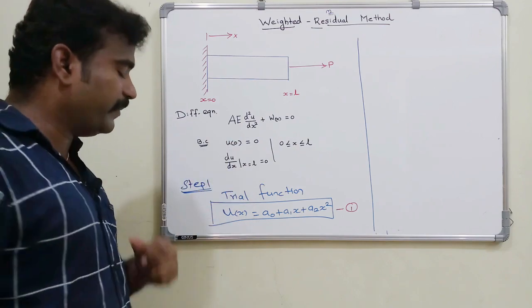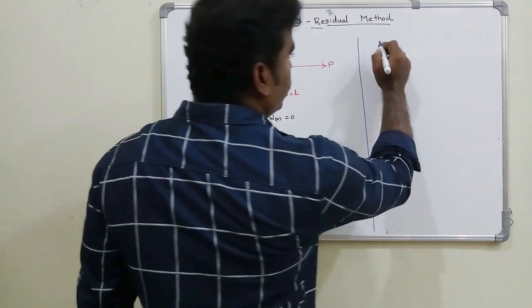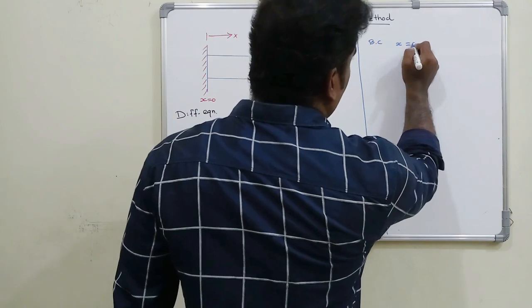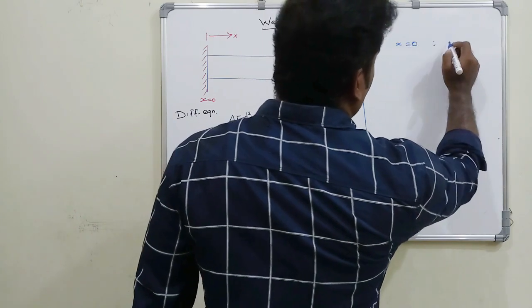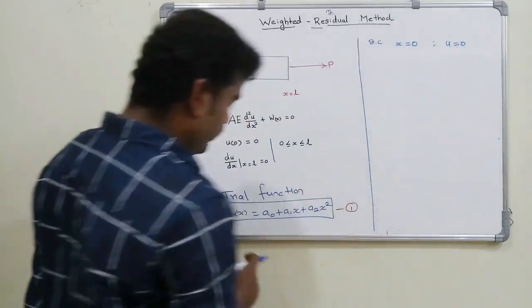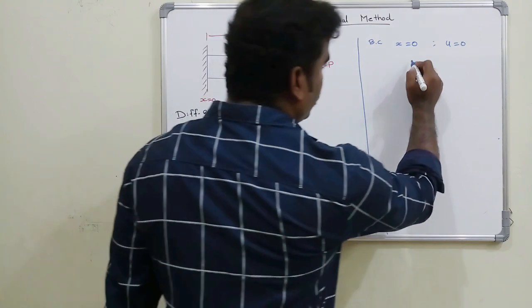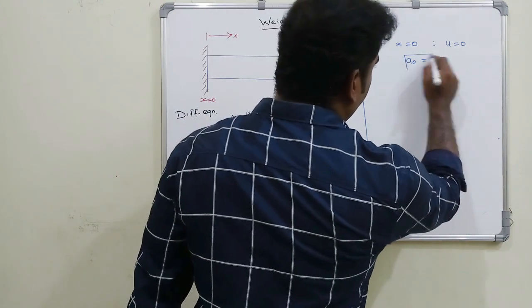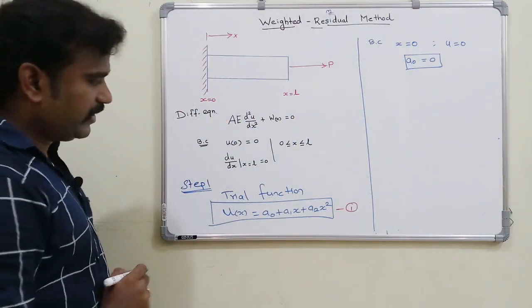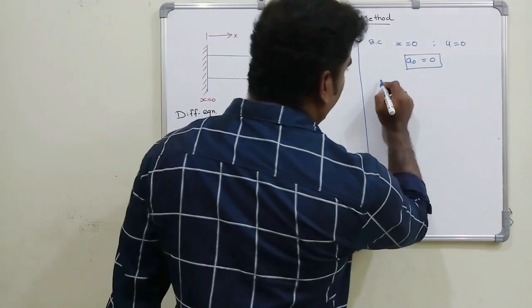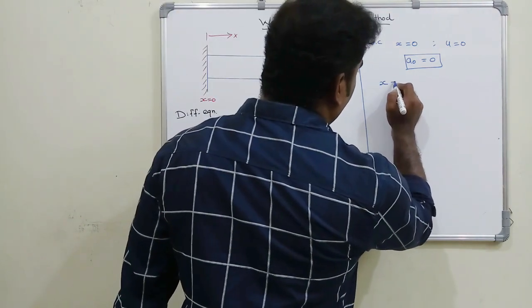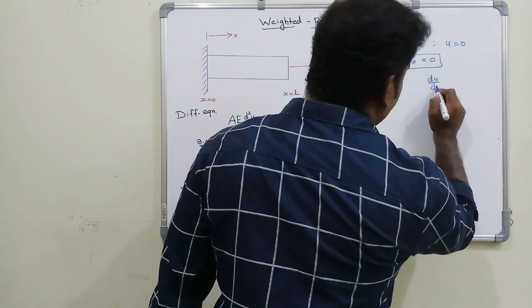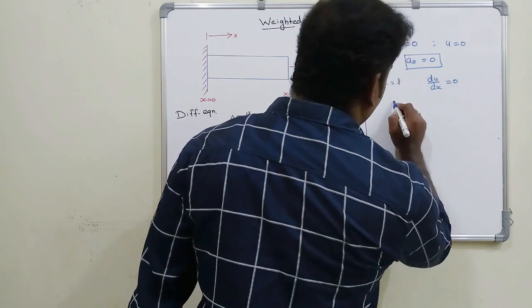Now I will apply the boundary conditions. At x = 0, u = 0: substituting gives a₀ = 0. At x = L, du/dx = 0.